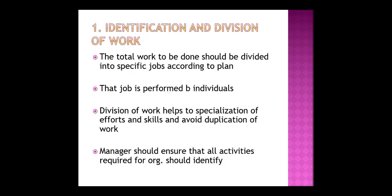The first step involved in the organizing process is identification and division of work. The total work to be done should be divided into specific jobs according to plans — what we have to do is already decided in planning. Within organizing, the first step is to identify and divide works: how many works are there, we identify them, and then with the same category of works we divide them into small jobs — tasks, units — which we call jobs. Total work is divided into specific jobs or specific units, and this is distributed according to plan.